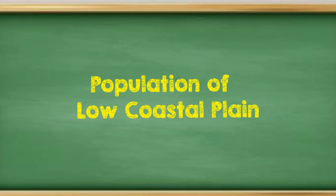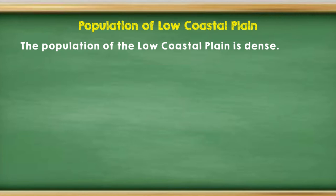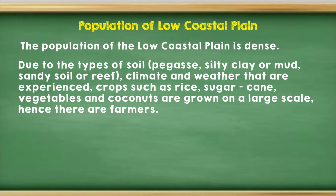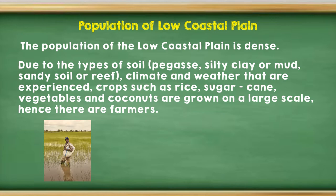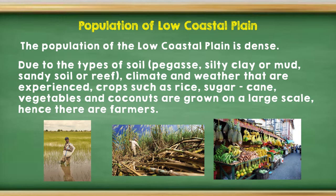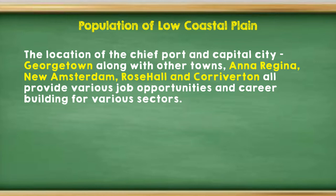Now let's examine the population of the low coastal plain. The population of the low coastal plain is dense. Due to the types of soil — pegas, silty clay or mud, sandy soil or reef — and the climate and weather experienced on the low coastal plain, crops such as rice, sugarcane, vegetables, and coconuts are grown on a large scale. Hence, there are farmers, and farmers make up the population of the low coastal plain to a large extent.